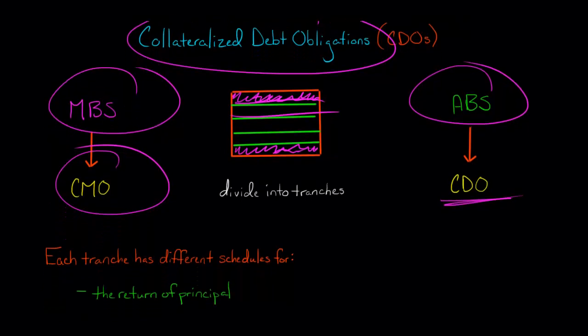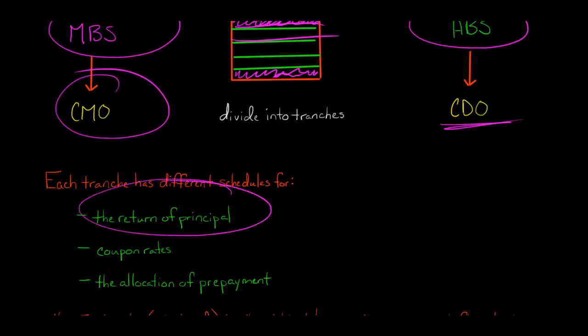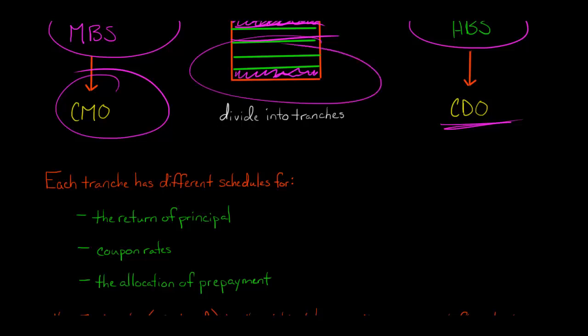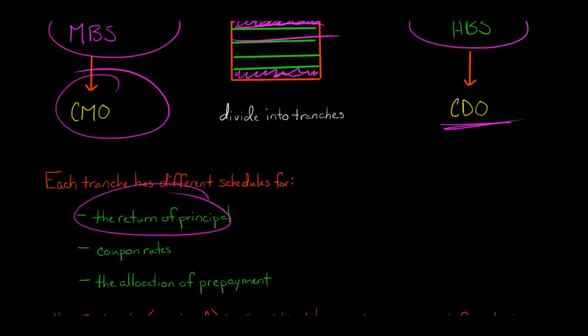Each tranche is going to have different schedules for the return of principal — basically getting the money back. The cash flows are coming from the underlying assets: mortgages in a CMO, or credit card receivables in a CDO. As the cash comes in from those borrowers, who is going to have the top priority in terms of return of principal? If you're in the bottom tranche — also called the Z tranche — you're going to have the lowest priority in terms of return of principal.